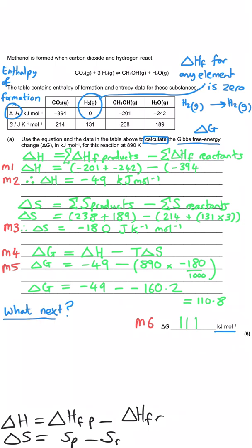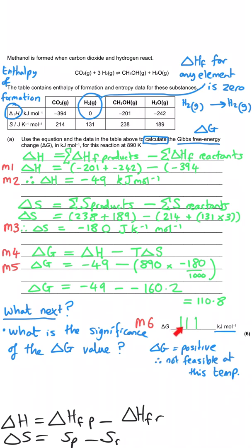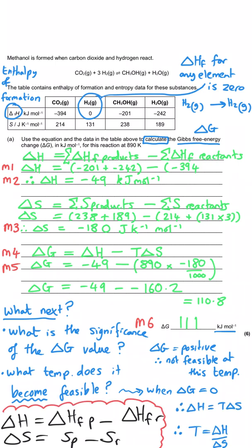Sometimes a delta G calculation then goes on to ask us to state the significance of our delta G value. It doesn't here. And so we would say, right, well, this delta G is a positive value. And so that means that this change is not going to happen spontaneously. It's not going to be feasible at 890 kelvin. And so a follow-up question to that might be, well, what temperature would it become feasible? And in this situation where you've got a negative entropy change and a negative enthalpy change, the reaction becomes spontaneous at the point where delta G is equal to zero. And so you rearrange the delta G expression and solve it for T, not forgetting that the entropy needs to be divided by a thousand because it's still in joules per kelvin per mole. And you can't divide kilojoules per mole by joules per kelvin per mole. So you have to make sure that you get them both in the same units and you solve for temperature in kelvin using this method.